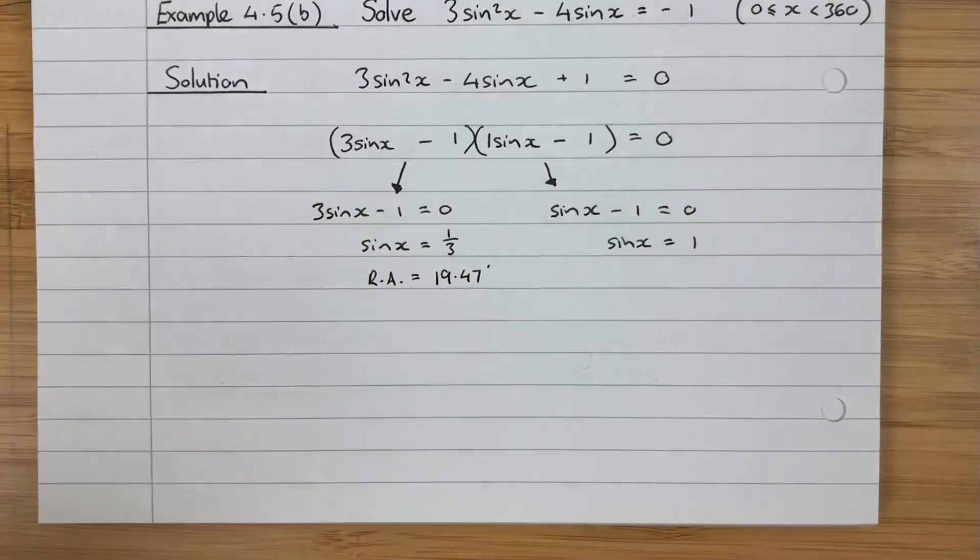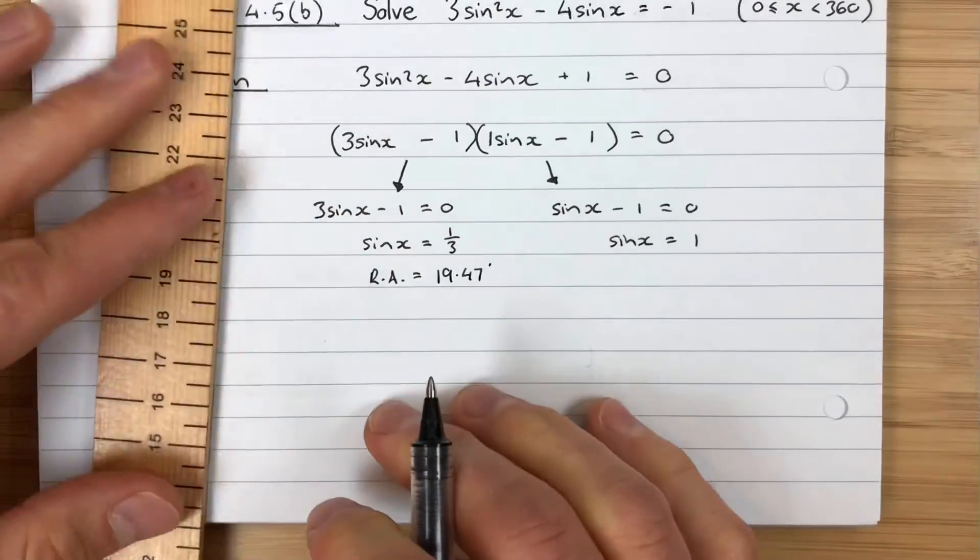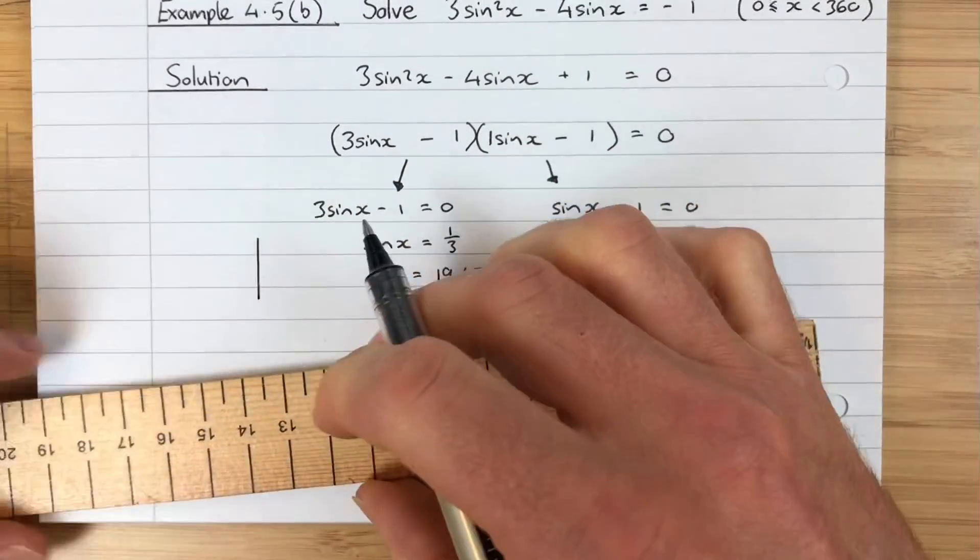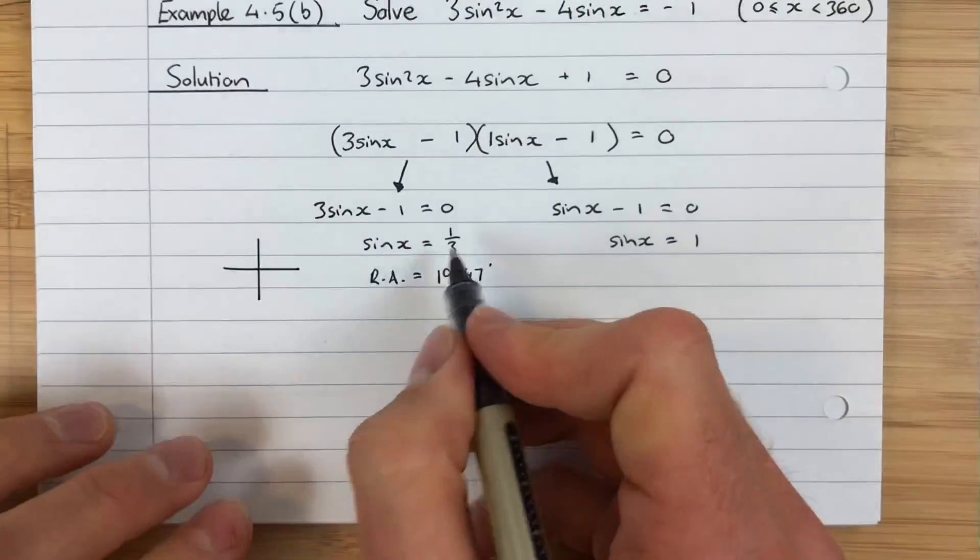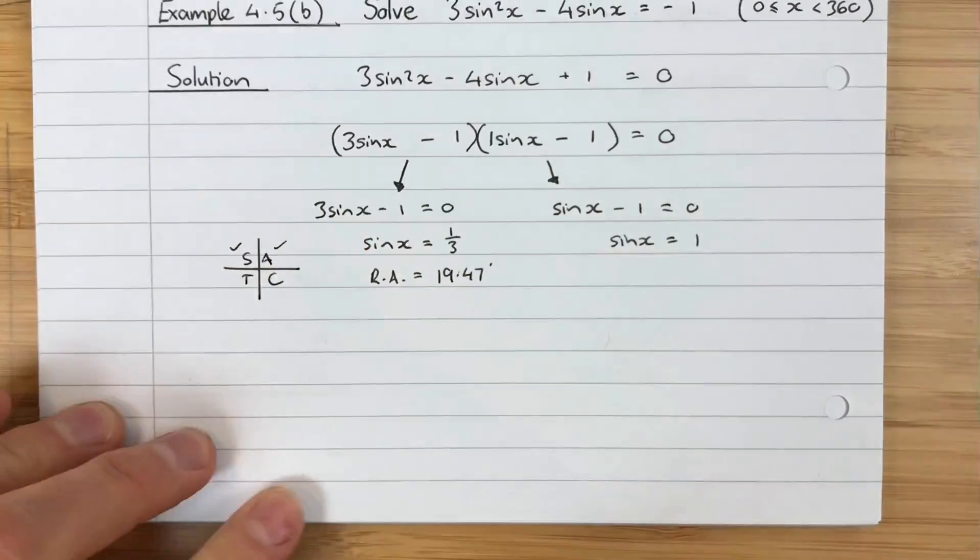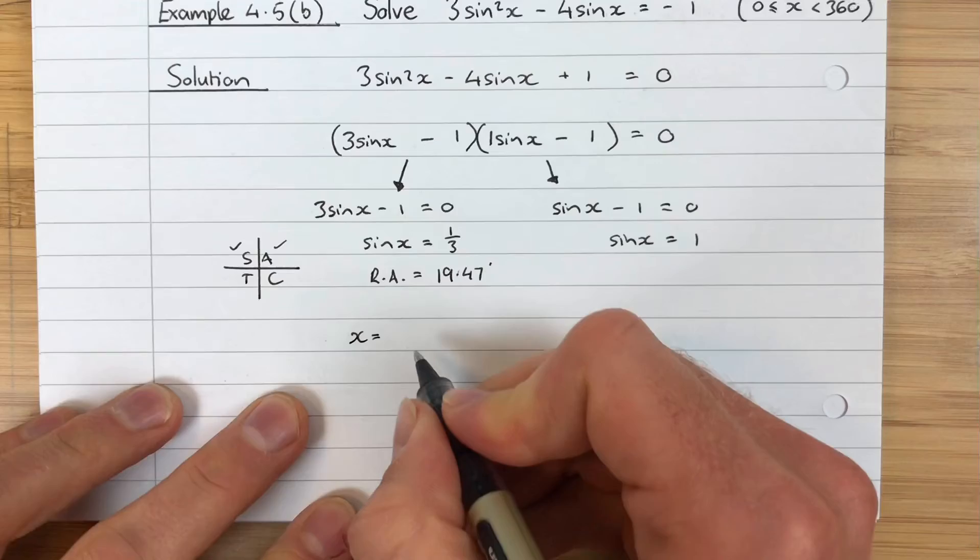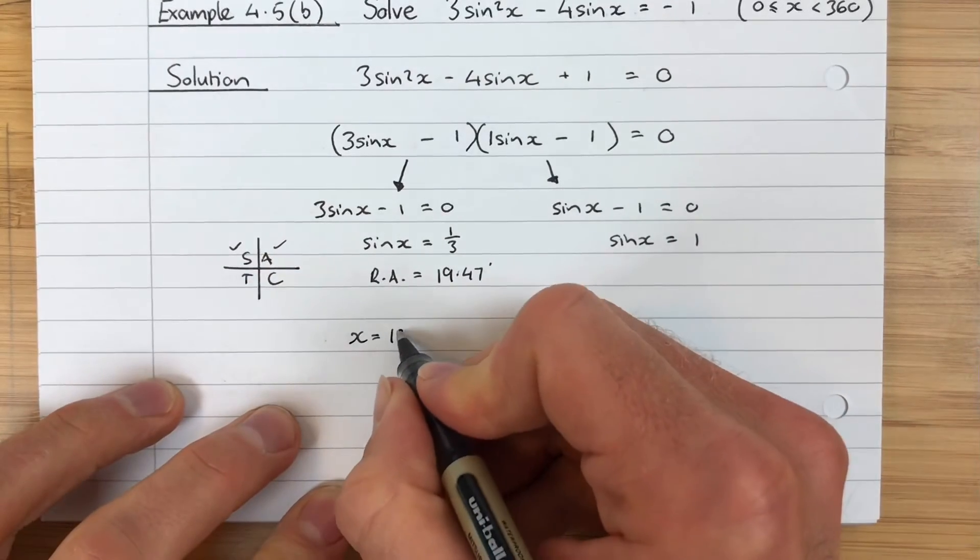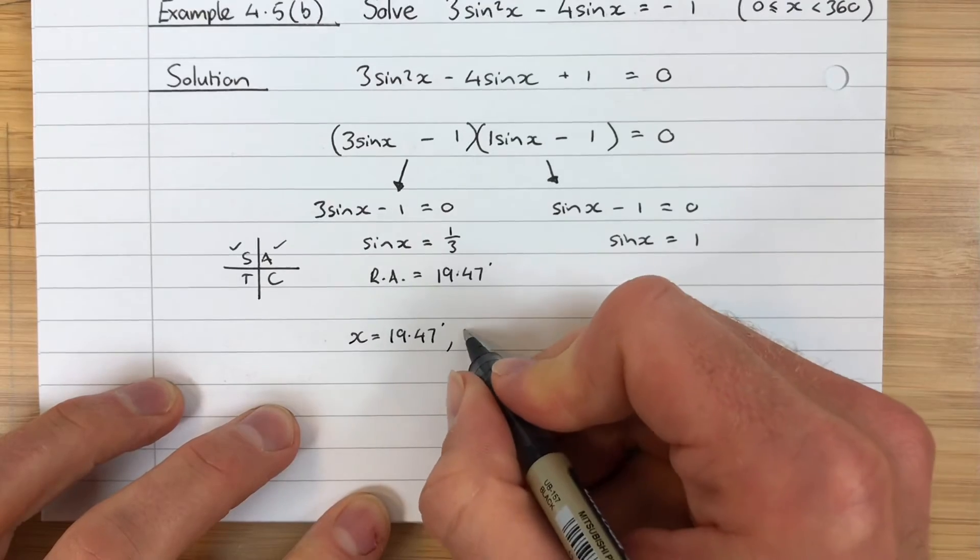I'm going to do my quadrant diagram over here where I've got a bit more space. My related angle is 19.47. Sine is positive, so I will be in quadrants 1 and 2. So my solutions for this side of the equation are x = 19.47° and 160.53°.